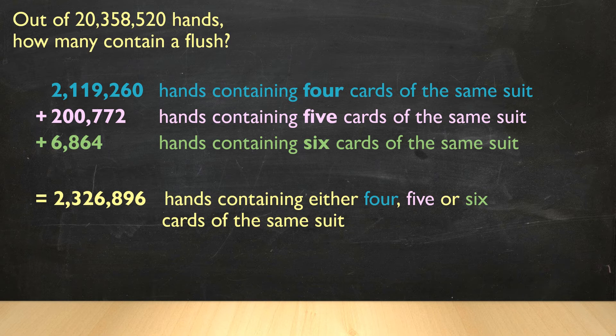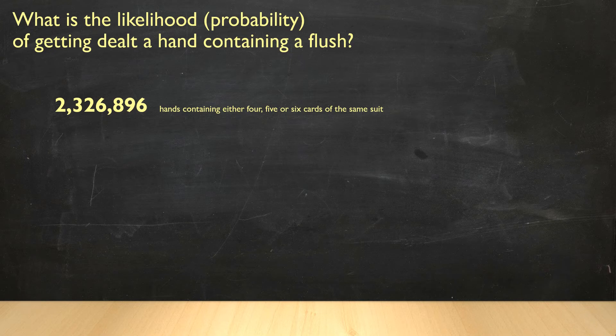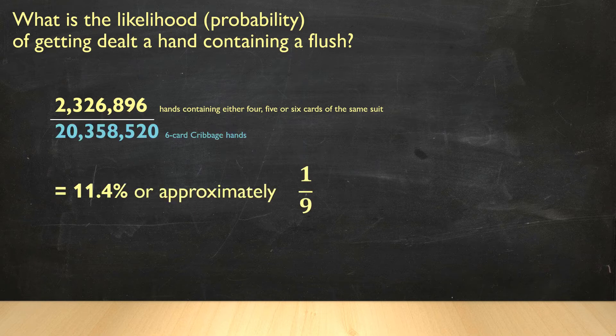We're almost done the math. There's just two more calculations to go. To determine the likelihood of getting dealt a hand that contains a flush, we take the total number of flush possibilities, which we know is 2,326,896. And we divide it by the total number of possible hands, 20,358,520. That gives us 11.4%, which means approximately one out of every nine hands will contain a flush possibility.